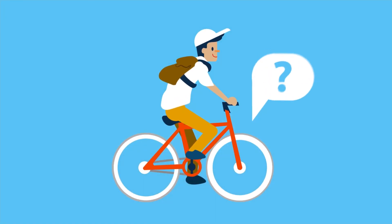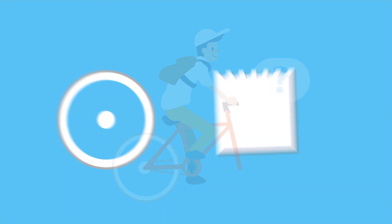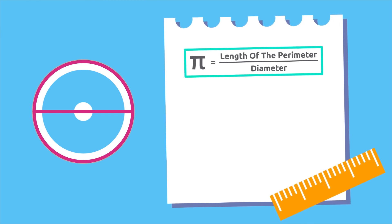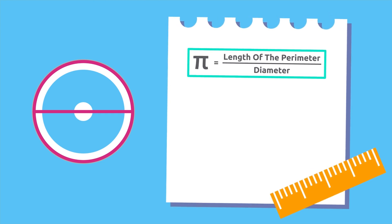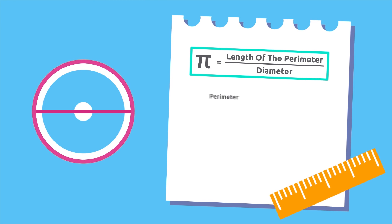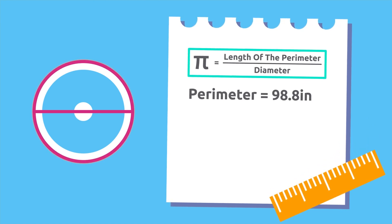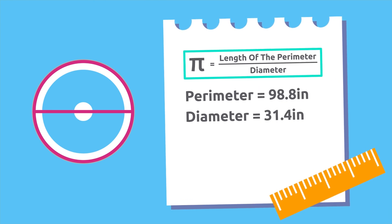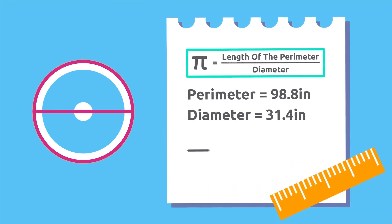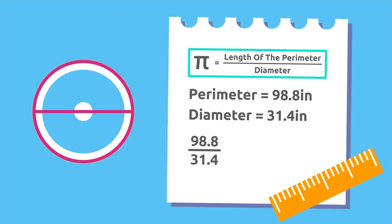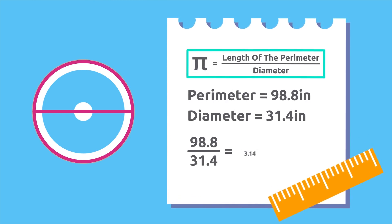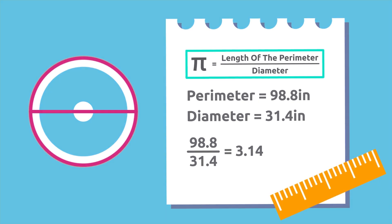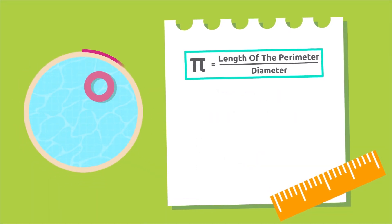For example, the wheel of this bike. Divide the length of the perimeter by its diameter and the result you'll get will be 3.14. Let's see: the perimeter of this wheel is 98.8 inches and its diameter is 31.4 inches. If we divide 98.8 by 31.4, we'll get 3.14.